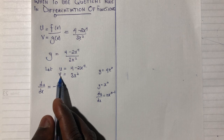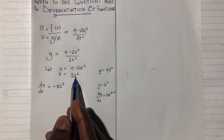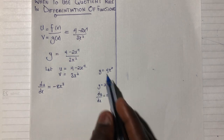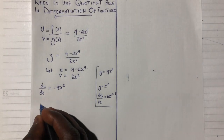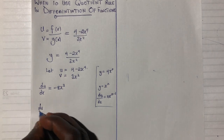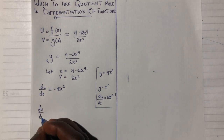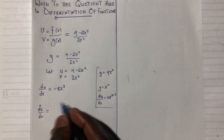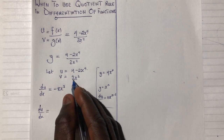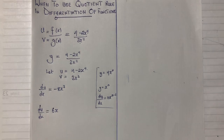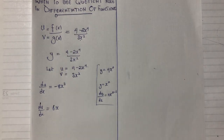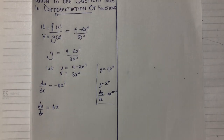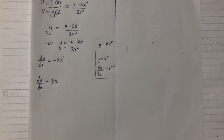In the next step, I differentiate v with respect to x. The derivative of v, dv/dx, gives me 6x — because 3 times 2 is 6, and 2 minus 1 gives x to the power 1. Now we can apply the quotient rule.